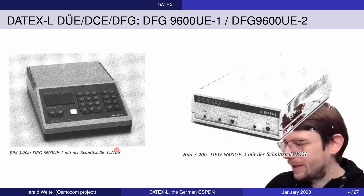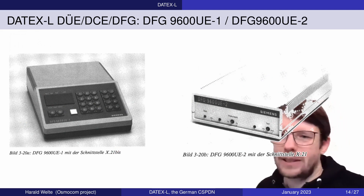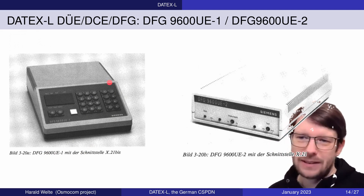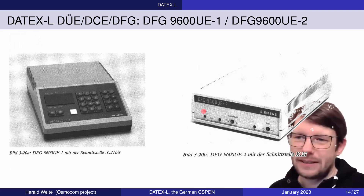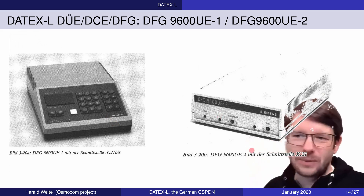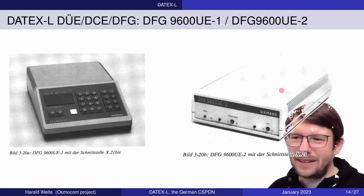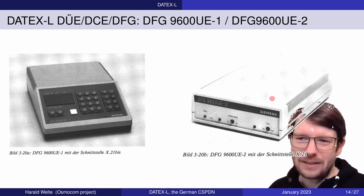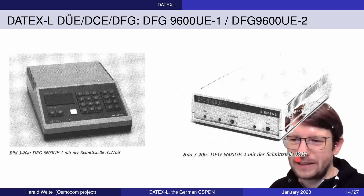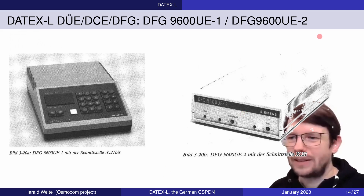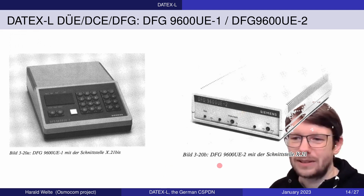This is the slightly later generation for 9600 bits per second. There was a DFG 9600 UE1, which still allows you to manually dial on the dial pad, and the DFG 9600 UE2, which looks more like a modem as we know it — a desktop brick-sized device with no buttons for dialing numbers, since the actual number to be dialed was conveyed over the X.21 interface from the terminal into the device, which then signaled it towards the electronic switch, the Datenvermittlungsstelle.